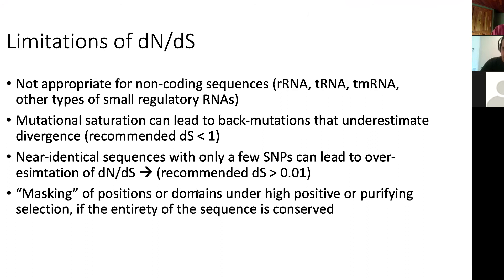Masking is another limitation. Masking occurs when only a small part of a sequence is evolving differently from the rest. This can occur in multi-domain proteins or in transmembrane or porin-type proteins — for example, most of the transmembrane hydrophobic regions may be under very little functional constraint, but the exposed loops are very constrained and conserved, possibly even undergoing positive selection. If you're looking at DN/DS globally averaged over the entire sequence, those short regions under strong purifying or positive selection can be masked and not detected.